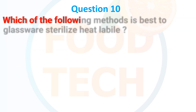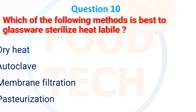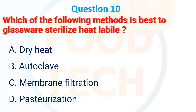Question 9: Which of the following methods is used for glassware sterilization by heat? a. Dry heat. b. Autoclave. c. Membrane filtration. d. Pasteurization. The correct answer is autoclave.